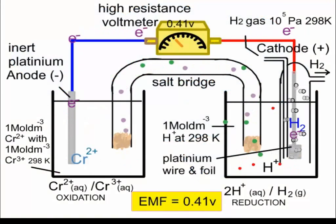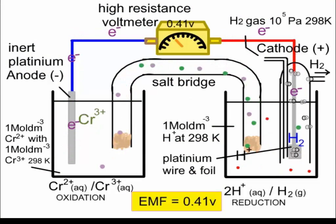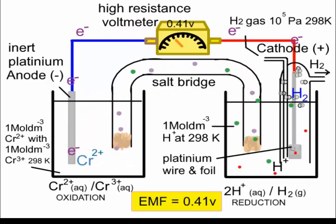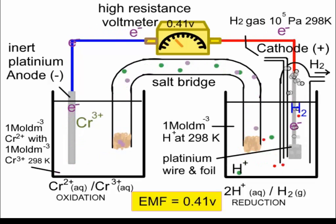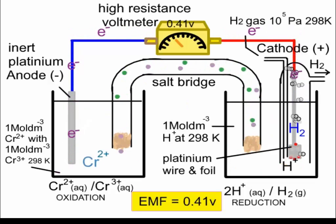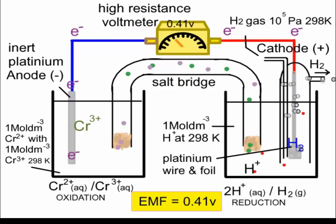Bear in mind that the EMF must always be positive for a galvanic cell. If it turns out to be negative, then an error has been made — the two half cells have been coupled back to front.